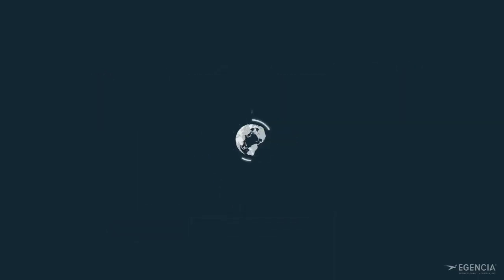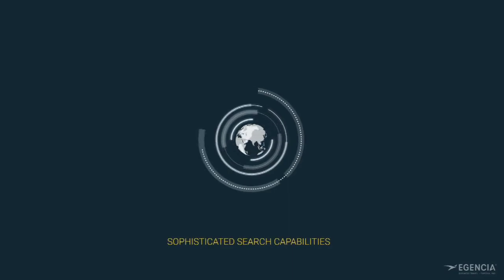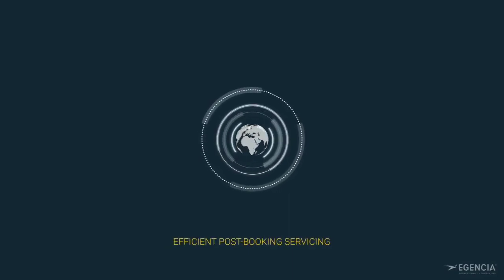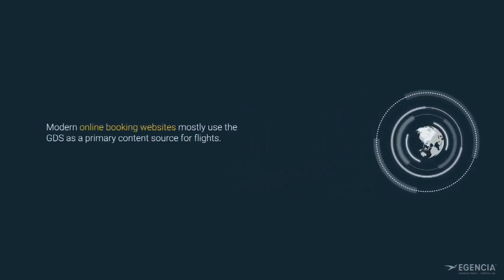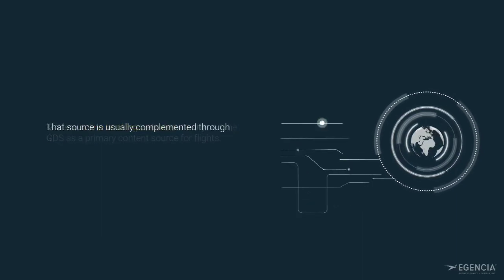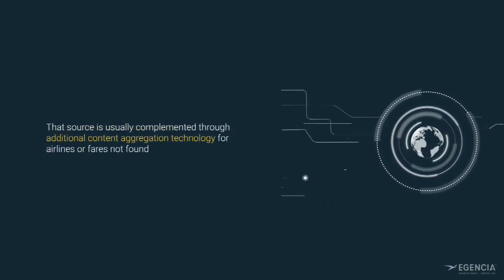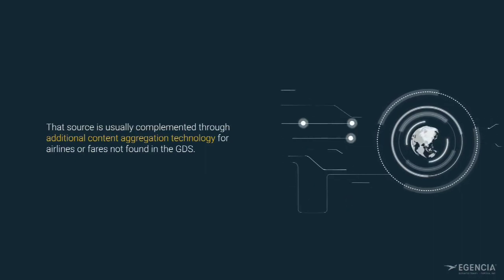GDS provide robust distribution technology with sophisticated search capabilities and efficient post-booking servicing. Therefore, modern online booking websites mostly use the GDS as a primary content source for flights. That source is usually complemented through additional content aggregation technology for airlines or fares not found in the GDS.